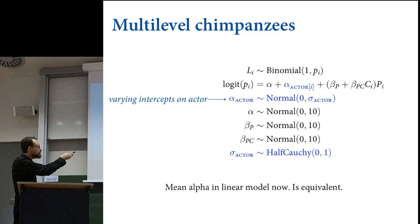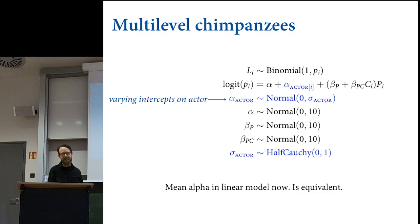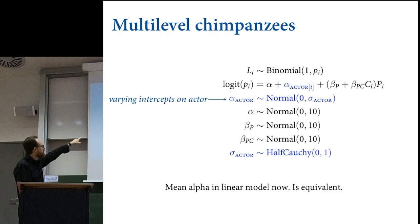Here's the multi-level chimpanzees model with just varying intercepts on actor. This is perfectly analogous to the tadpole data, except that there are predictors now—the interaction between condition and prosocial option. The action is from alpha sub-actor: for each actor, there's a unique intercept.